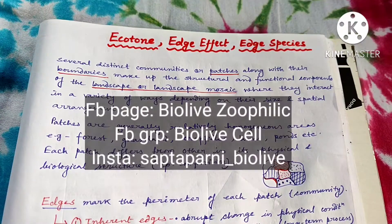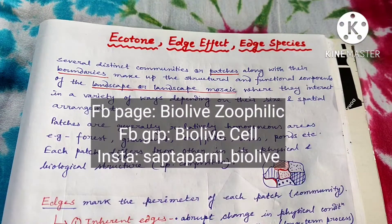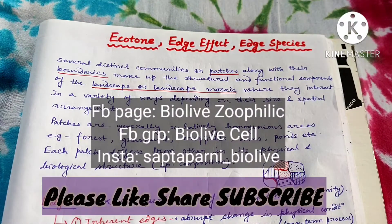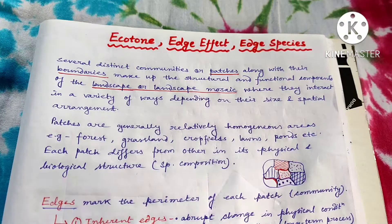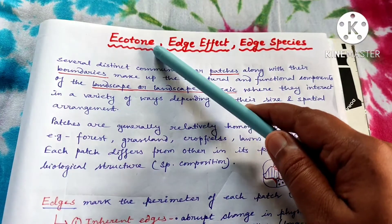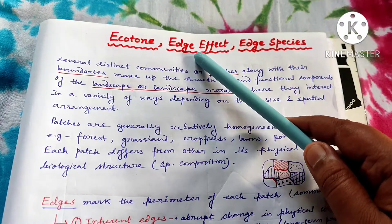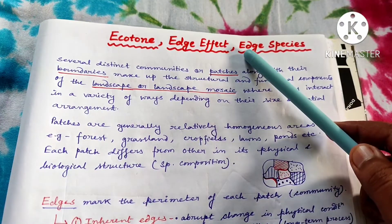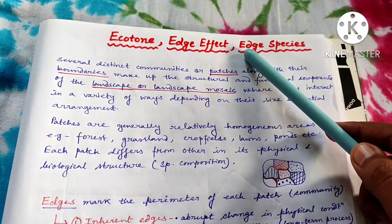Welcome friends, myself Shoptapurani from Biolive. Hope all of you are doing very well. Today we are going to learn about three important terms of ecology known as ecotone, edge effect, and edge species.